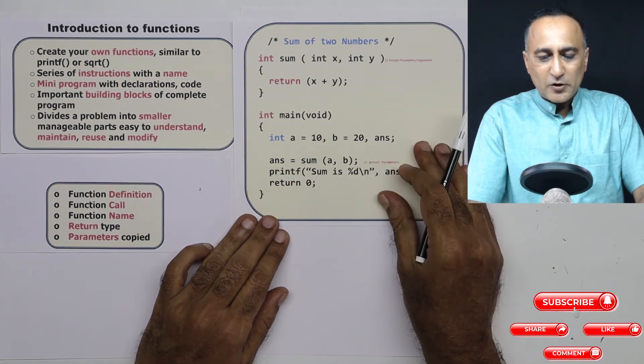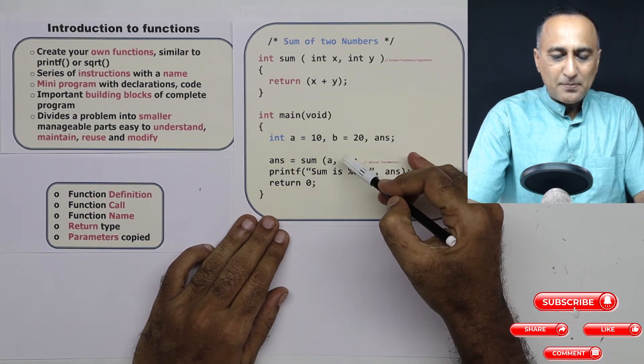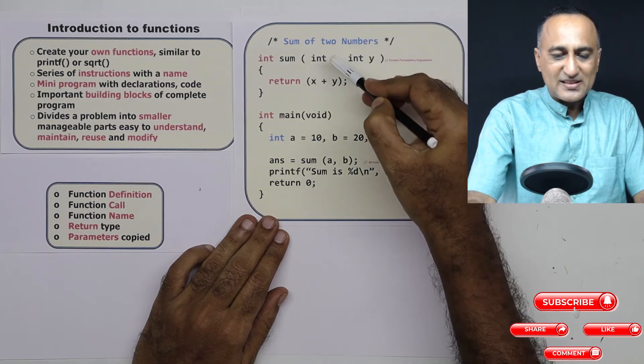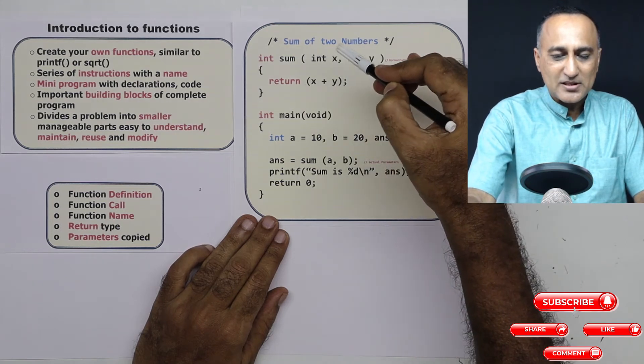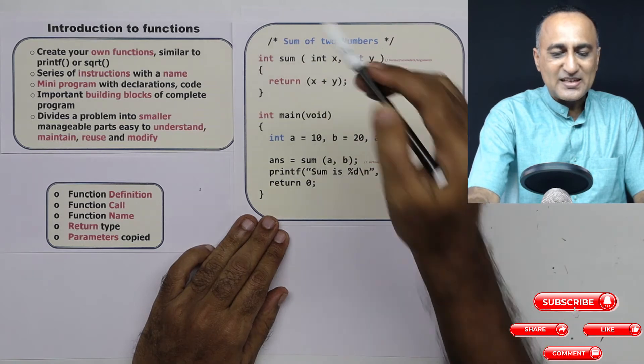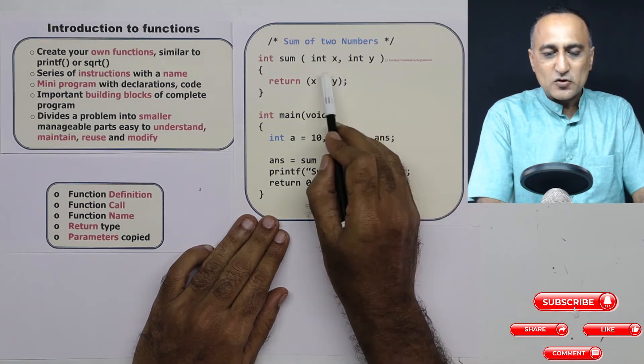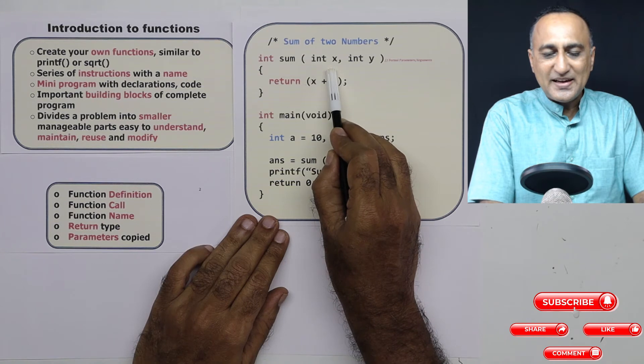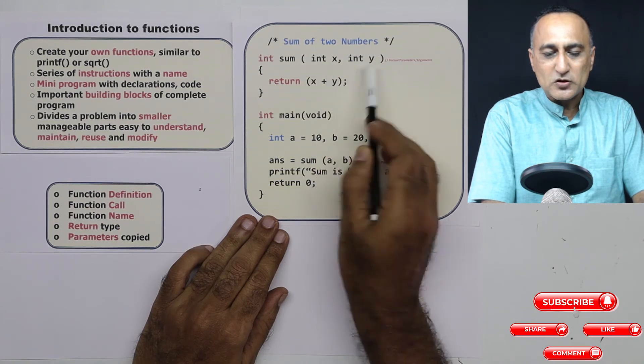I have already told you about a and b, these are parameters in main. These are formal parameters in sum. So this is the way you declare them: int x is integer, y is also integer.